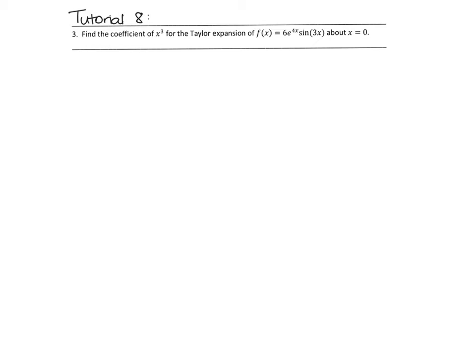In this video we're going to look at Tutorial 8, Question 3. The first thing to note is that we're asked for the Taylor expansion of some function about x equals 0, and really all that's asking us is to find the Taylor polynomial. Sometimes this is called the Maclaurin series, the Maclaurin polynomial, or the Taylor polynomial. We're asked to find just the coefficient of x cubed, so we don't actually have to find the whole Taylor expansion.